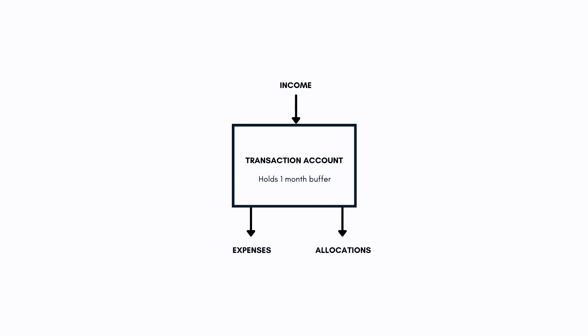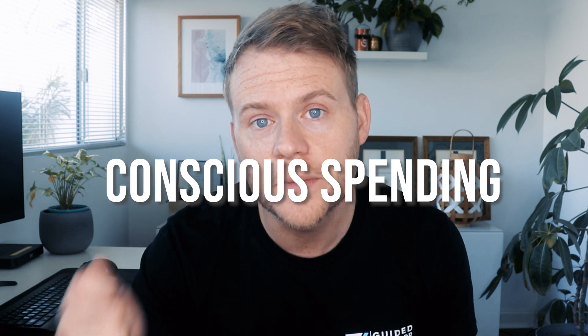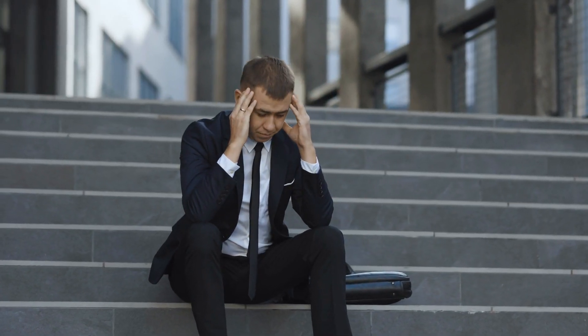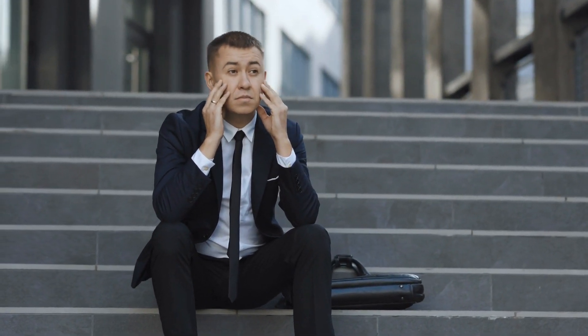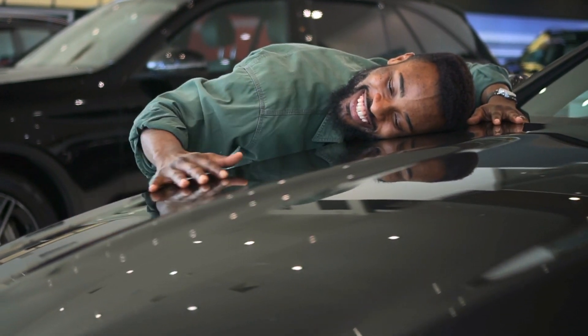The next account is a savings account, which is going to be a combination of your emergency fund and any additional savings on top of that for other purposes. Any time you take money out of your savings account it should be done consciously - no tap and go, and in fact you shouldn't even have a card available for your savings account. If you're dipping into your savings account to top up your transaction account, something's gone wrong and you need to revisit your budget.